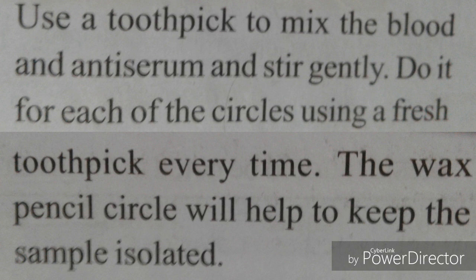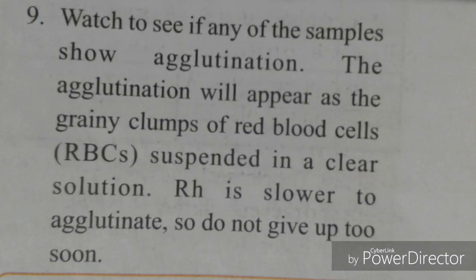Step 9: Watch to see if any of the samples show agglutination. Agglutination means clumping of blood cells — if this happens, blood transfusion cannot be done. The agglutination will appear as grainy clumps of red blood cells suspended in a clear solution. RH factor is slower to agglutinate, so do not give up too soon.